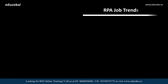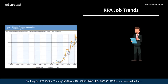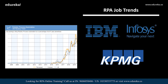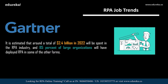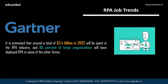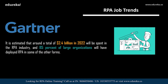The number of RPA developer jobs in the United Kingdom is increasing on a large scale. Carrier opportunities will shoot through the roof as both startups and well-established companies such as IBM, Infosys, and KPMG are offering lucrative salaries. According to Gartner, around 2.4 billion US dollars is estimated to be spent in the field of RPA by 2022, and 85% of large organizations will have deployed RPA in some form.